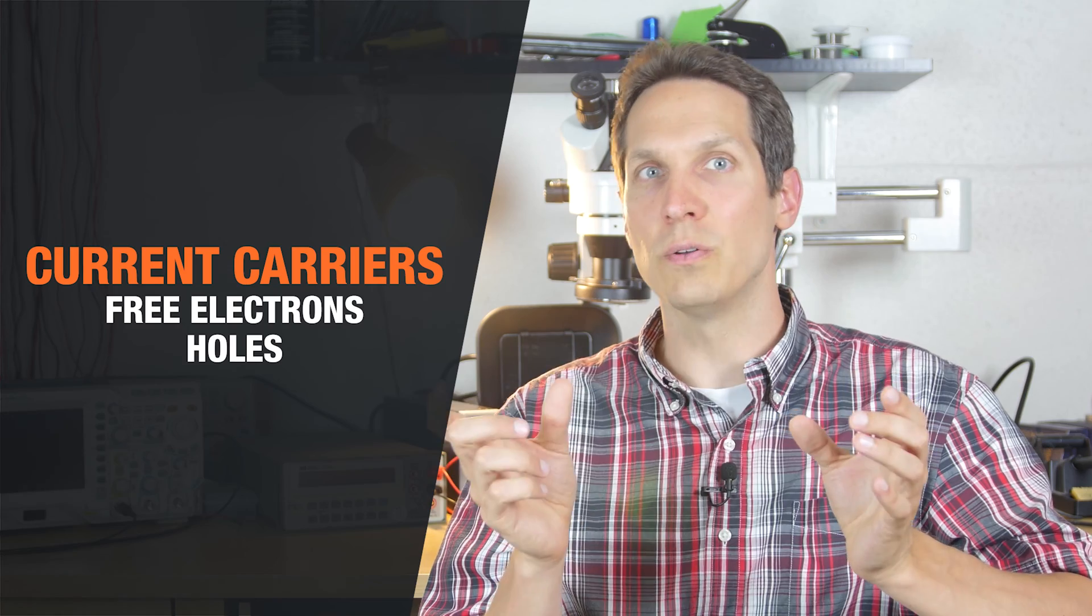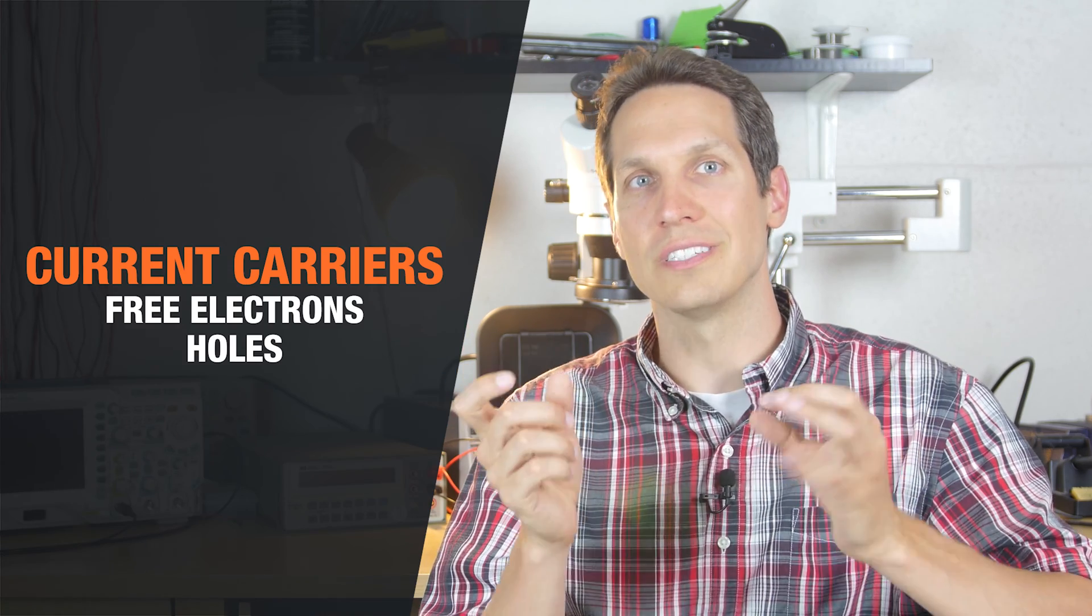Now that we know more about band gap, let's discuss the two types of current carriers in a semiconductor, free electrons and holes, and see how they produce currents in a semiconductor.